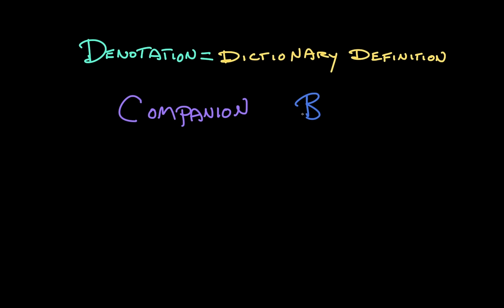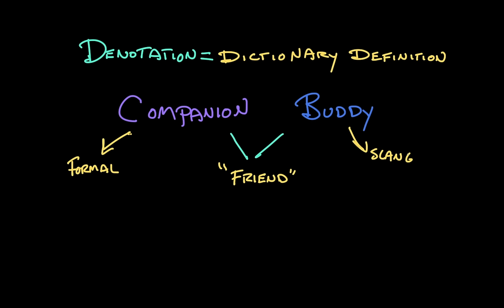Companion and buddy both have similar denotations — they both mean friend — but companion is a much more formal-sounding word than buddy, which originated as a piece of slang from the 19th century. So even though their denotation or literal definition is the same, they feel different. The connotation of companion is formal, while the connotation of buddy is friendly and casual.